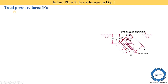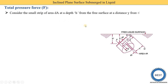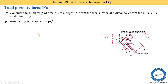Now we find out the total pressure force F. We consider a small strip of area dA. The procedure is similar to horizontal or vertical plane surfaces submerged in a liquid. We consider a small strip at a depth H from the free surface and at a distance Y from the O-O axis. The pressure acting on the strip is P = ρgH, so pressure increases as H increases.